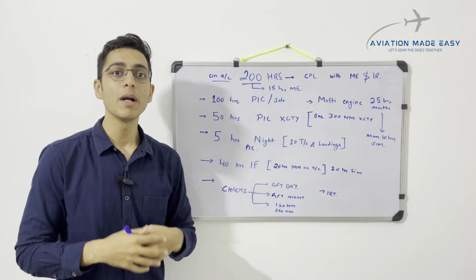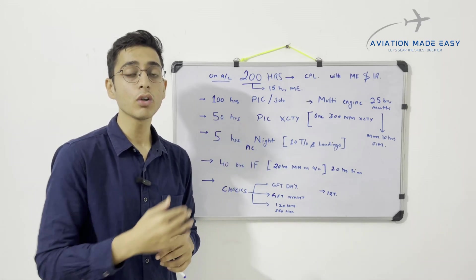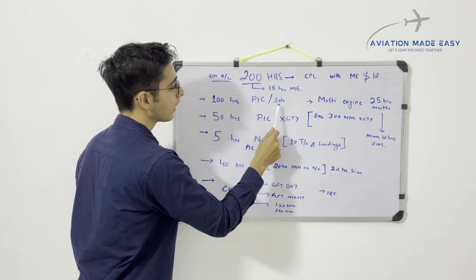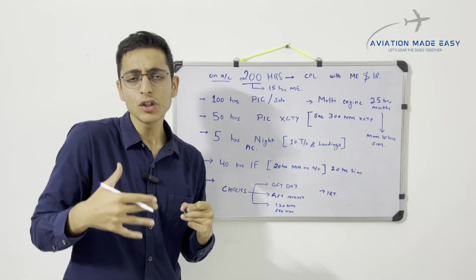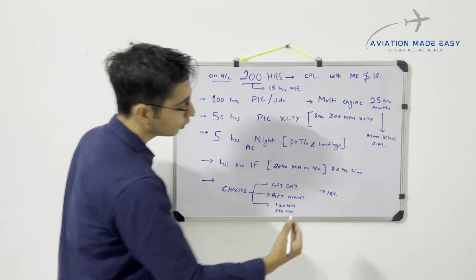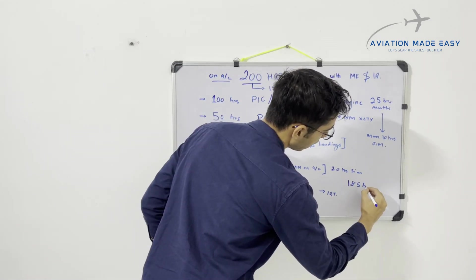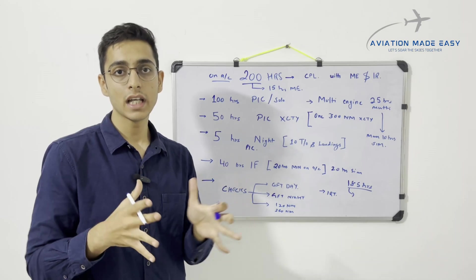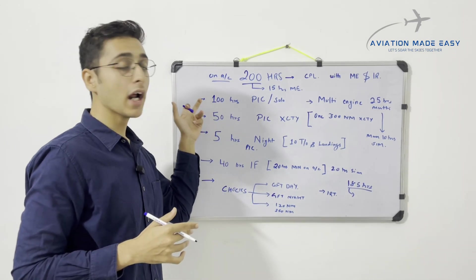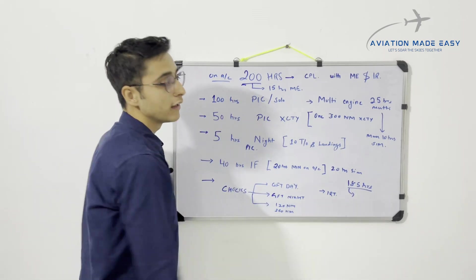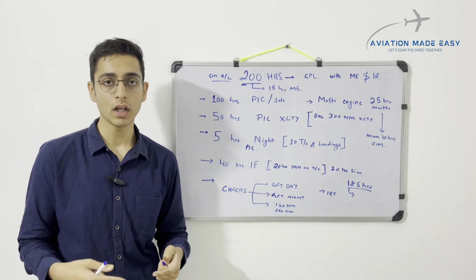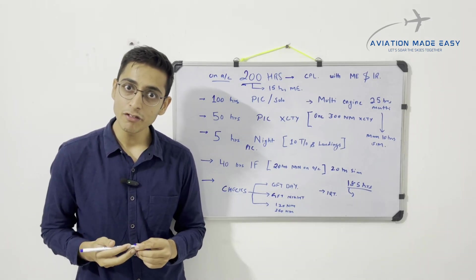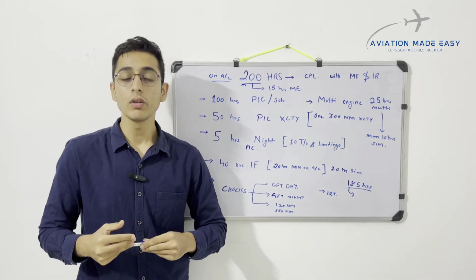Instrument flying hours are always dual, and there are multiple checks needed before being released for general flying and cross-country. The key point is: the more dual hours you do out of your 185 aircraft hours, the fewer PIC hours you'll accumulate. If you can't reach 100 hours PIC within 200 hours, you must extend and pay extra — which is why some people end up doing 210 to 220 hours.